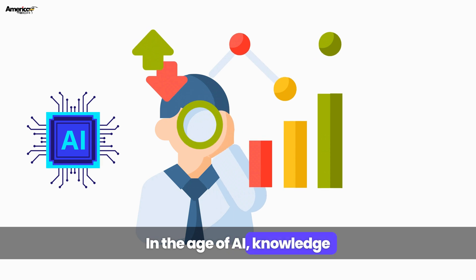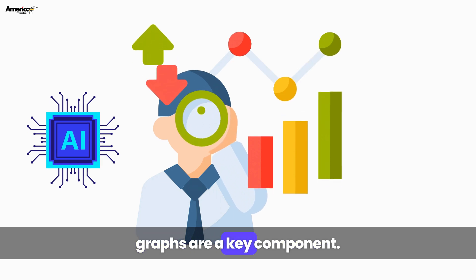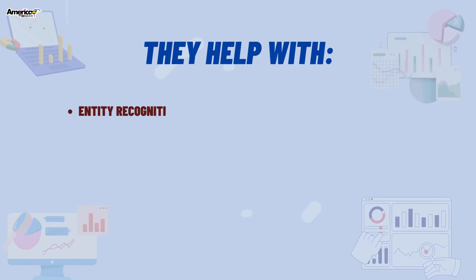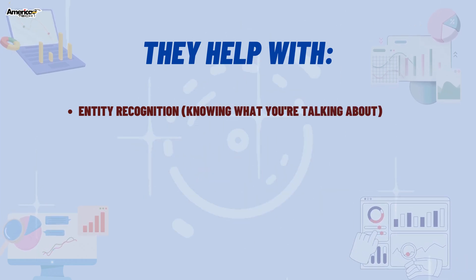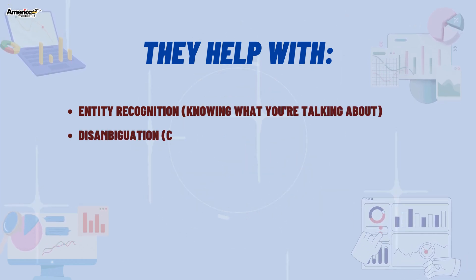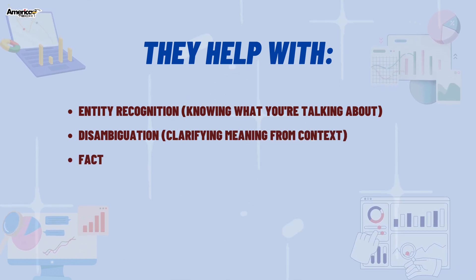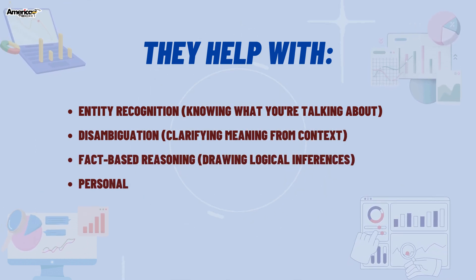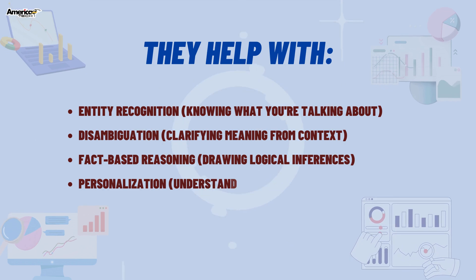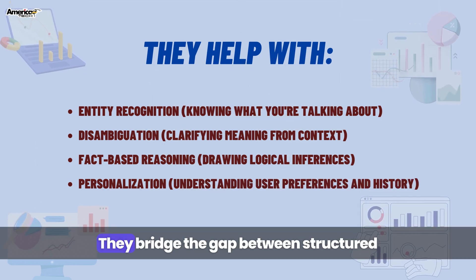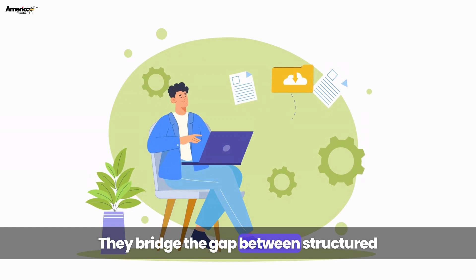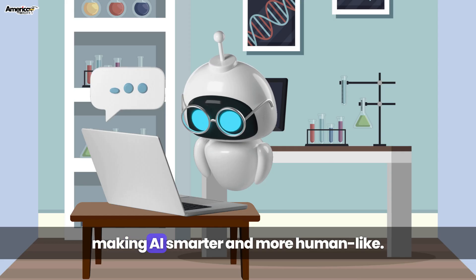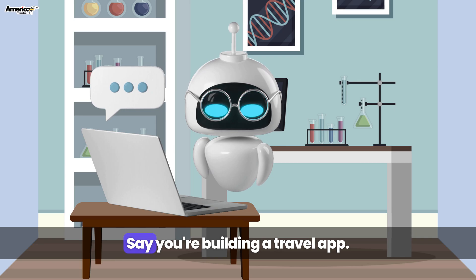In the age of AI, Knowledge Graphs are a key component. They help with entity recognition — knowing what you're talking about; disambiguation — clarifying meaning from context; fact-based reasoning — drawing logical inferences; and personalization — understanding user preferences and history. They bridge the gap between structured data and natural language, making AI smarter and more human-like.